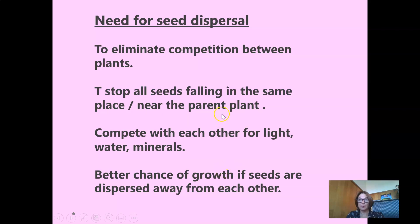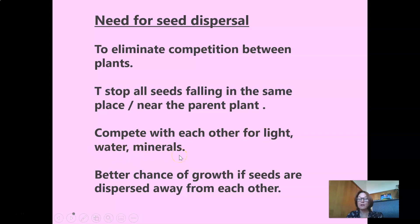The reasons for seed dispersal are: to eliminate competition between plants — you don't want plants right next to each other — and to stop all seeds falling in the same place near the parent plant. If they fall in the same place, they'll compete for light, water, and minerals from the soil. There is a better chance of growth if the seeds are dispersed away from each other.